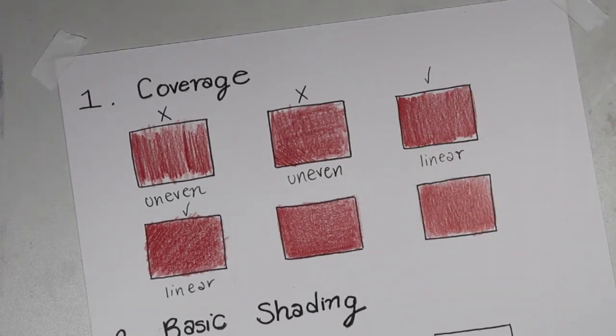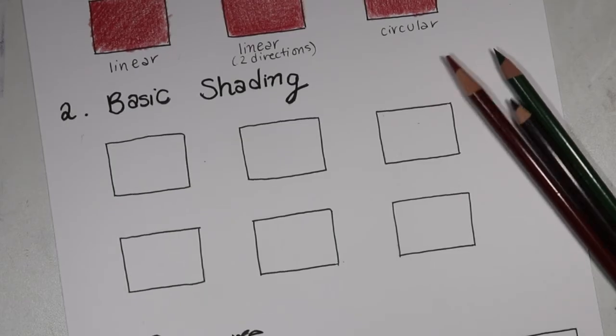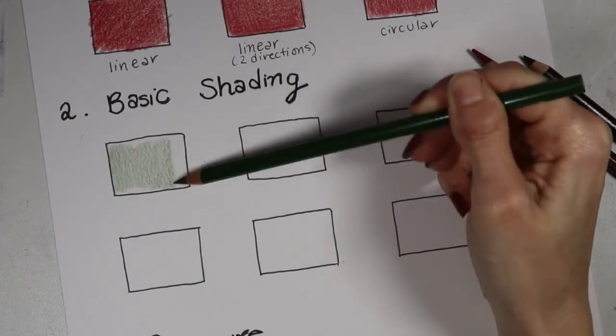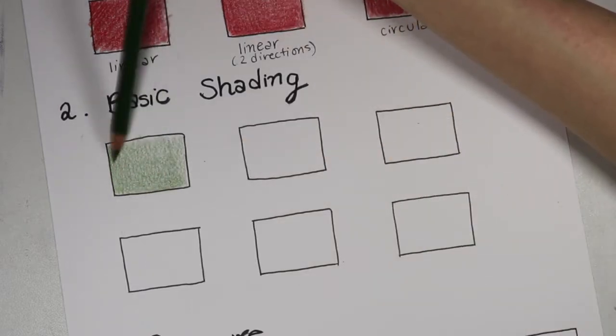As you can see, coloring in a circular motion is actually a really good method as well. So now that we know how to get the best coverage with our colored pencil, let's go ahead and move on to learning some basic shading techniques. I'm a bit tired of that aggressive red color, so I'm switching it out for some earthy tones. I'm going to get started with the green and do some nice smooth shading that we just learned how to do when we talked about coverage.